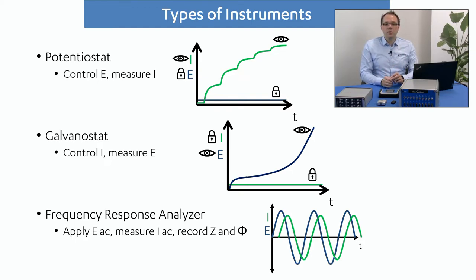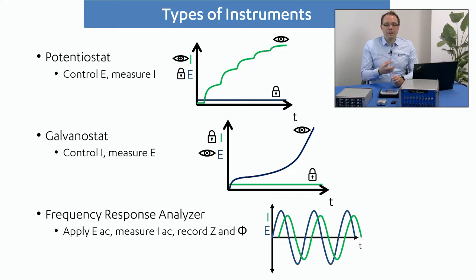These three devices are used for different applications. The potentiostat is used, for example, in analytical chemistry to control the potential and this way select a certain reaction — the current response usually correlates with, for example, the concentration of the analyte you're interested in. You can also use it for other things like controlling corrosion. Galvanostats are especially interesting if you want to deposit a fixed amount of substance, because that correlates with charge, and with a constant current it's very easy to calculate the charge. The same is also true for battery applications — this is why battery experts like to charge their batteries with constant current.